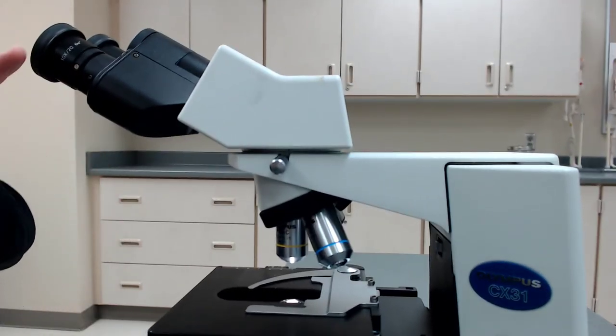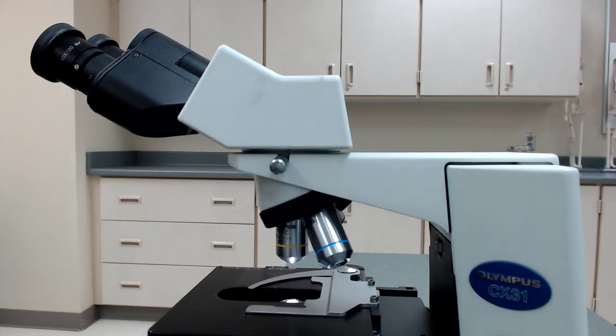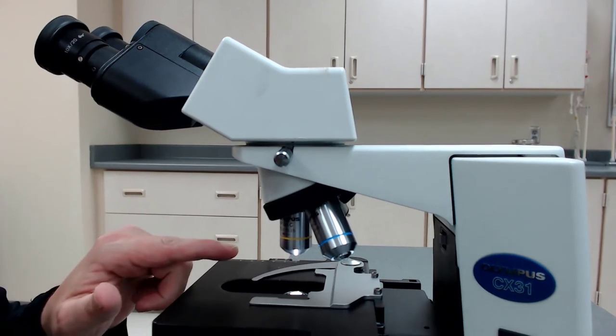So you have an objective there, and there's a second lens system up in the ocular. So I don't know how well you can see it, but this says 10x right here. So you actually, if you're figuring out the total magnification, you take your objective, which in this case was 10x, and multiply it by the 10x here in the ocular.